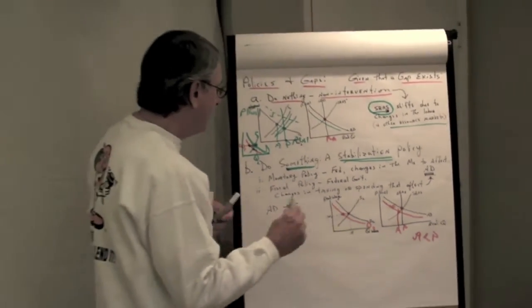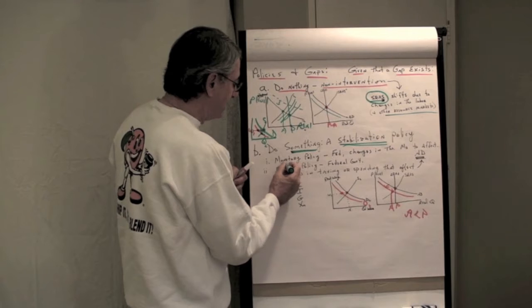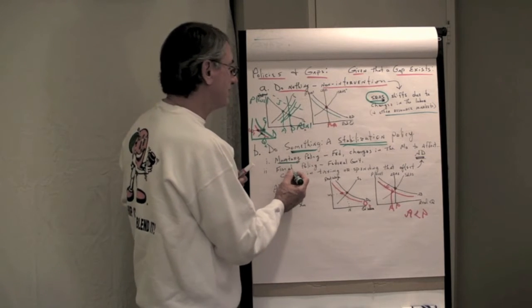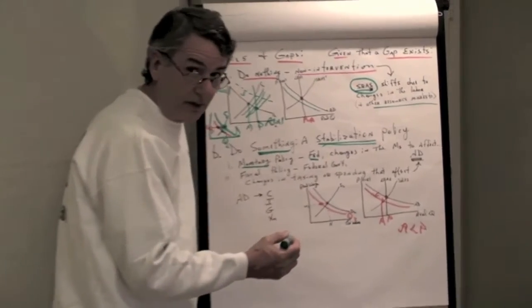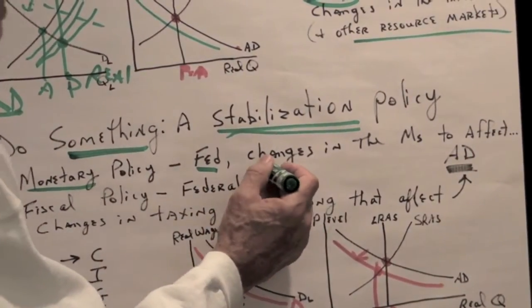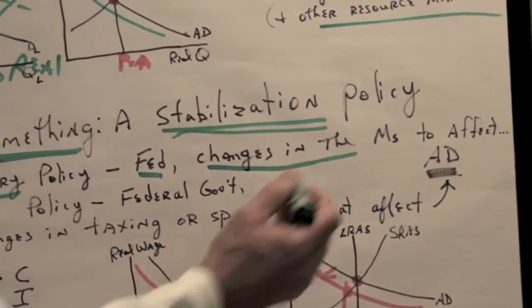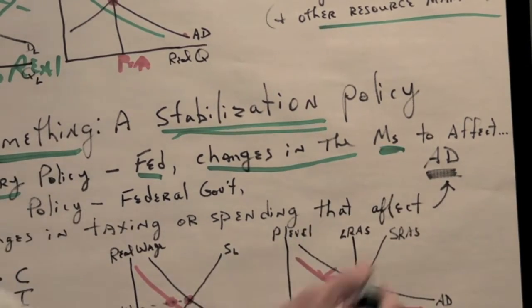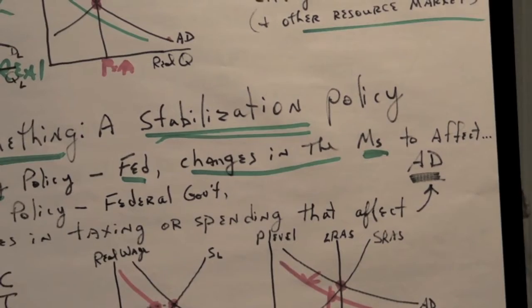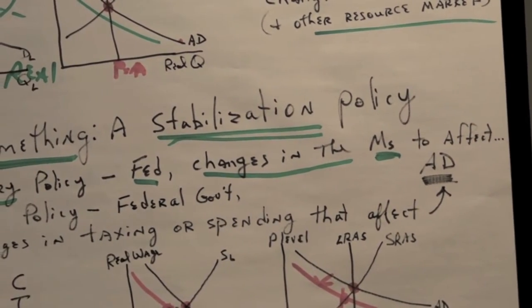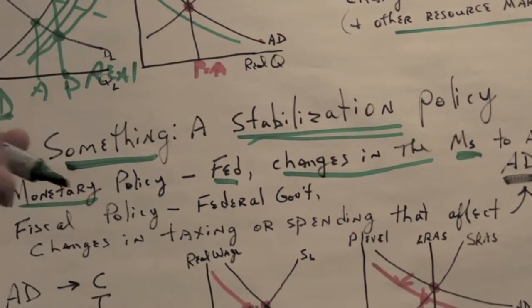Now, we can do something, that is, stabilize the economy using monetary policy. Monetary policy is done by the Federal Reserve, not the Federal Government, the Federal Reserve. And the Federal Reserve changes the money supply with the intention of lowering interest rates. Now, when interest rates are lowered because the Federal Reserve has increased the money supply, aggregate demand changes.